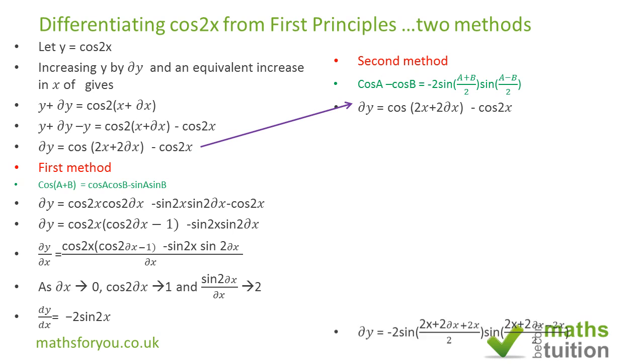Now this bit is our A there and 2x is our B. So we end up with delta y is equal to minus 2 sine into 2x plus 2 delta x, which is our A plus B, which is 2x divided by 2. And similarly, sine 2x plus 2 delta x, which is our A minus 2x there.